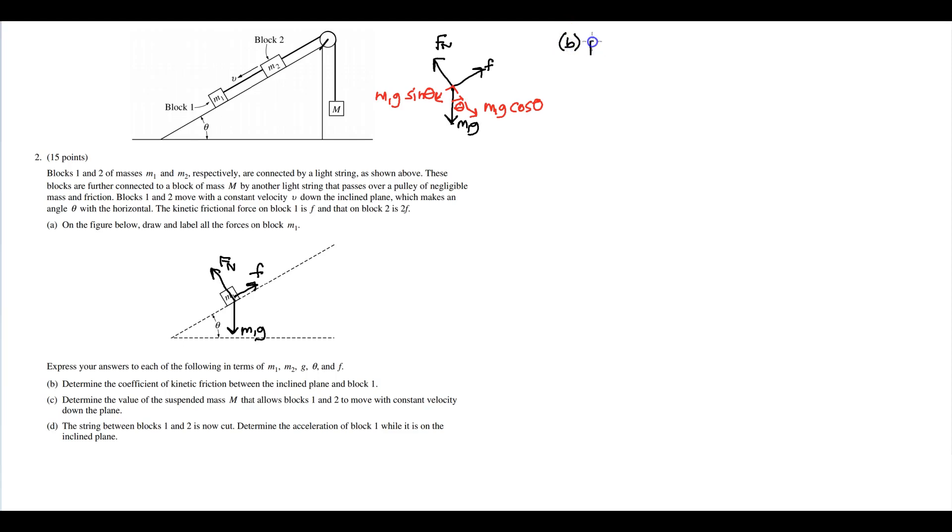So the friction force equals m1 g cosine theta. That's f on block one equals m1 g cosine theta. That means mu k equals f divided by m1 g cosine theta. That's the answer to part B.